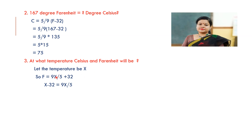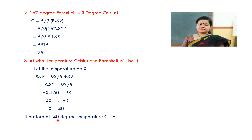Taking 32 to this side: X − 32 = 9X/5. Multiplying both sides by 5: 5X − 160 = 9X. Rearranging: 4X = −160, and hence X = −40. That means at −40 degrees, both Celsius and Fahrenheit are equal — minus 40 degree Celsius equals minus 40 degree Fahrenheit.